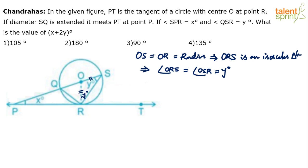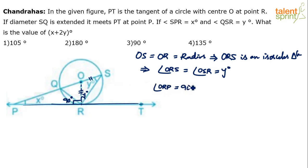OR is the line dropped from the center of the circle to the tangent PT. Any line drawn from the center of the circle to the tangent at the point of contact is perpendicular to the tangent. So angle ORP equals 90 degrees.